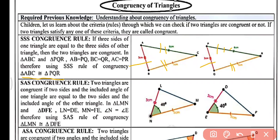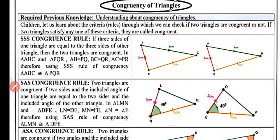Now the second rule is Side-Angle-Side congruency rule. Two triangles are congruent if two sides and the included angle of one triangle are equal to the two sides and the included angle of the other triangle. Here you can see triangle LMN and DEF, in which LN equals DE, MN equals FE, and angle N equals angle E, that is 40 degrees. By using the Side-Angle-Side rule, triangle LMN is congruent to triangle DFE.